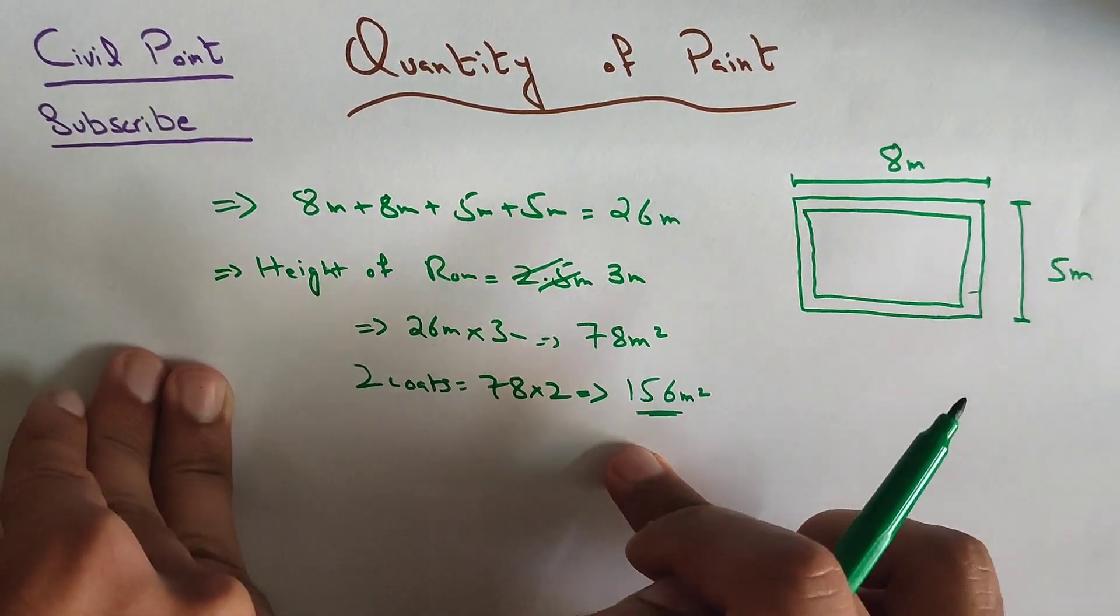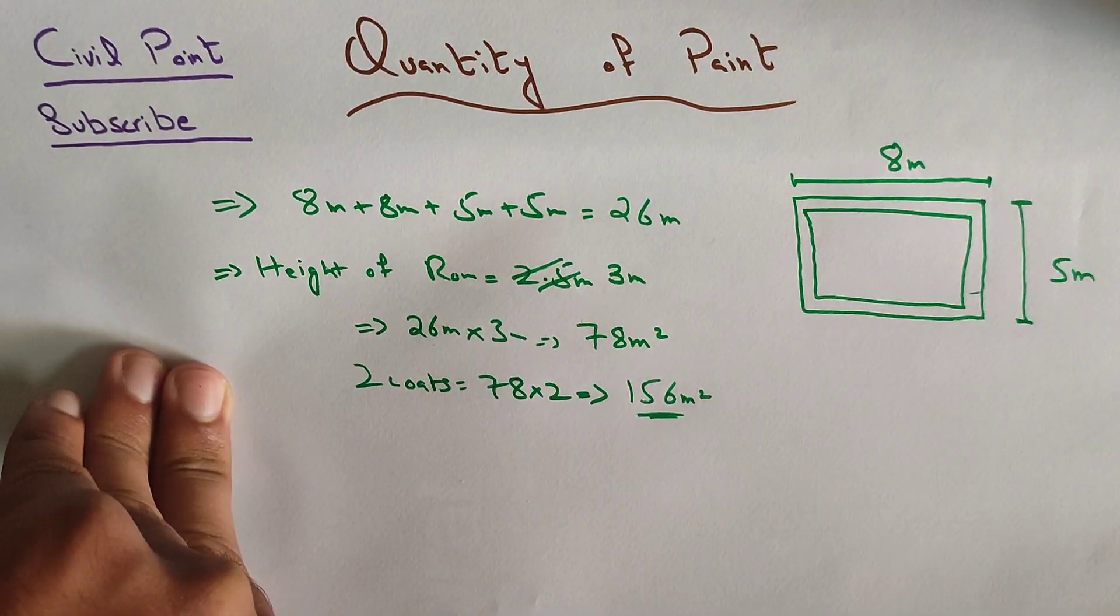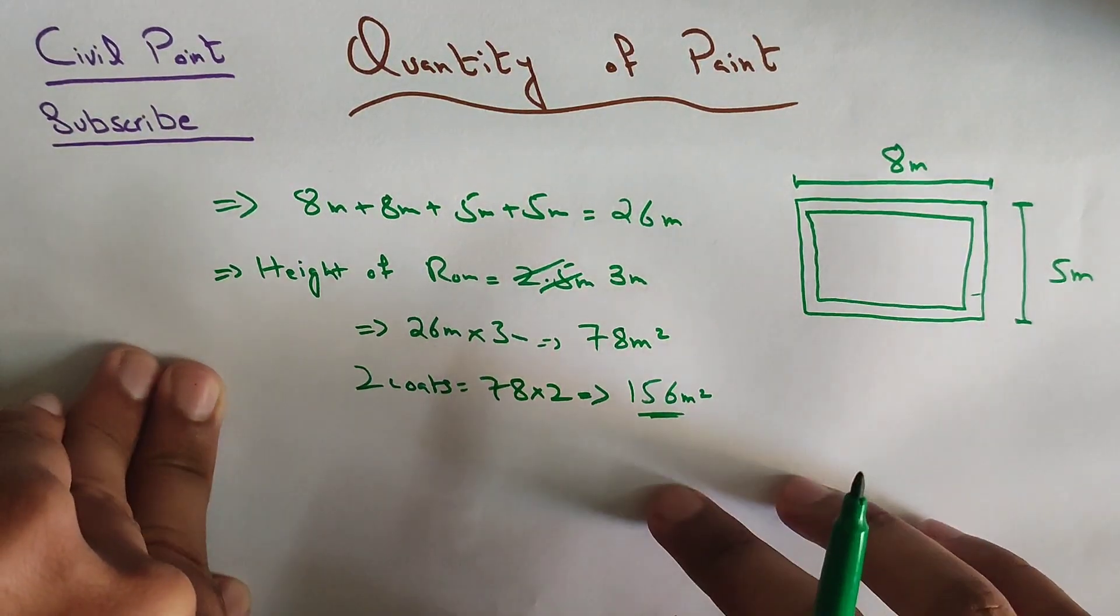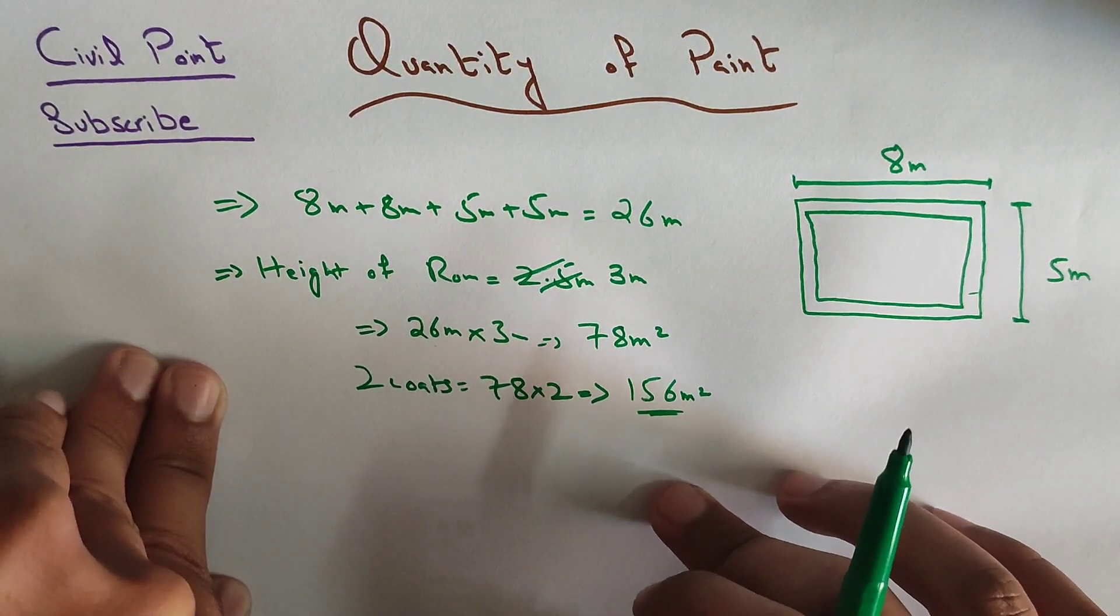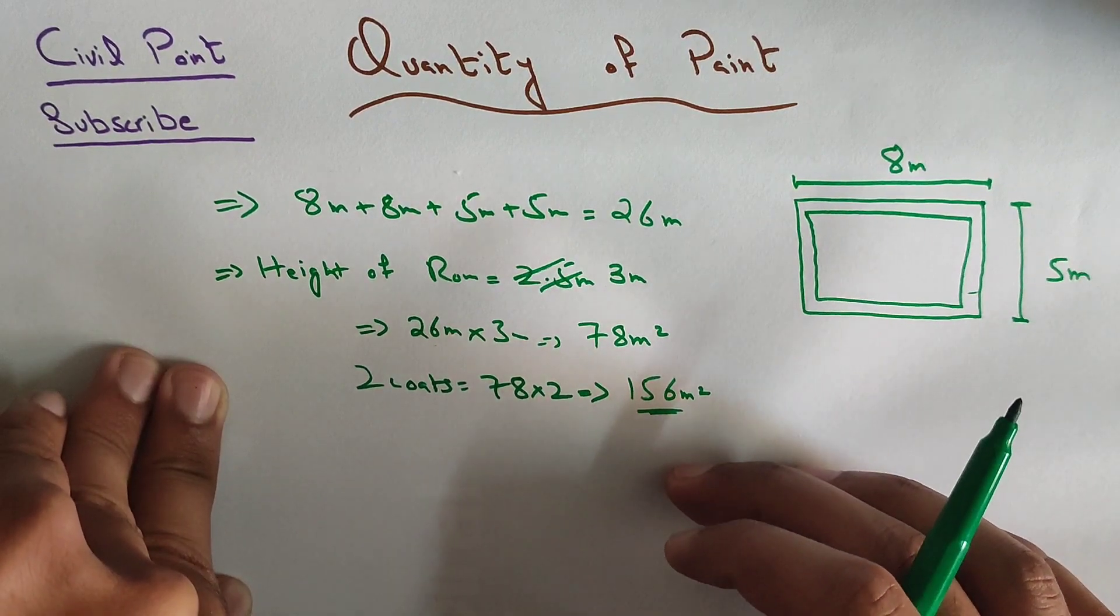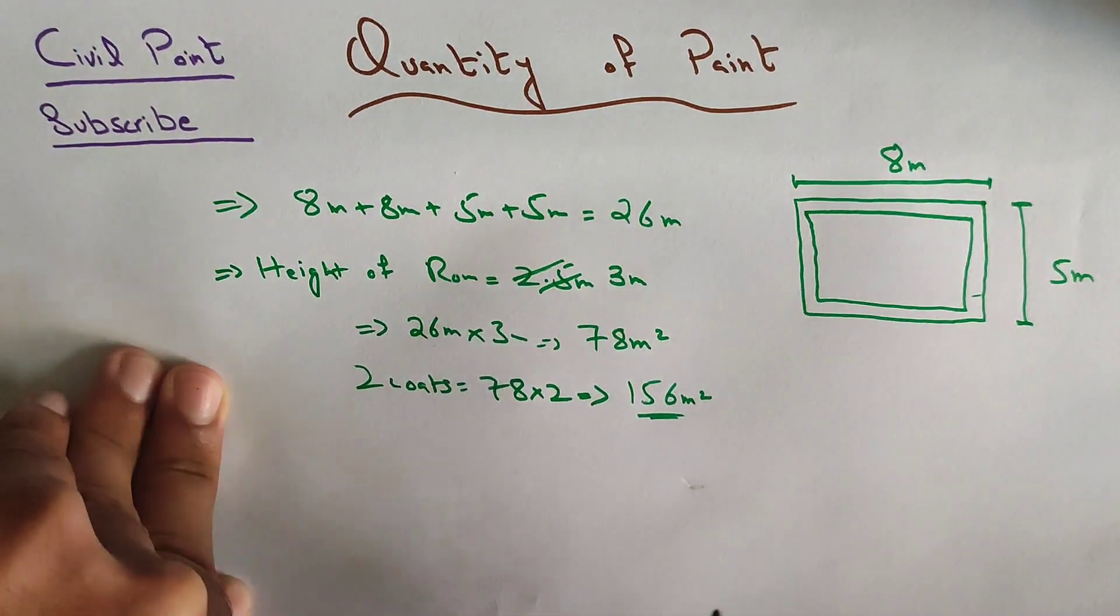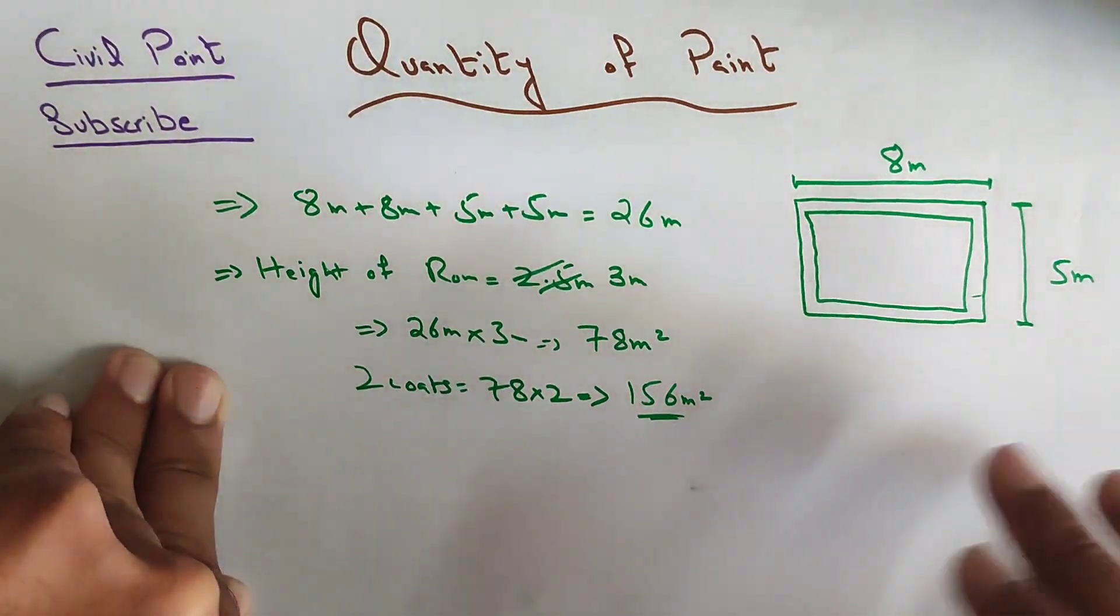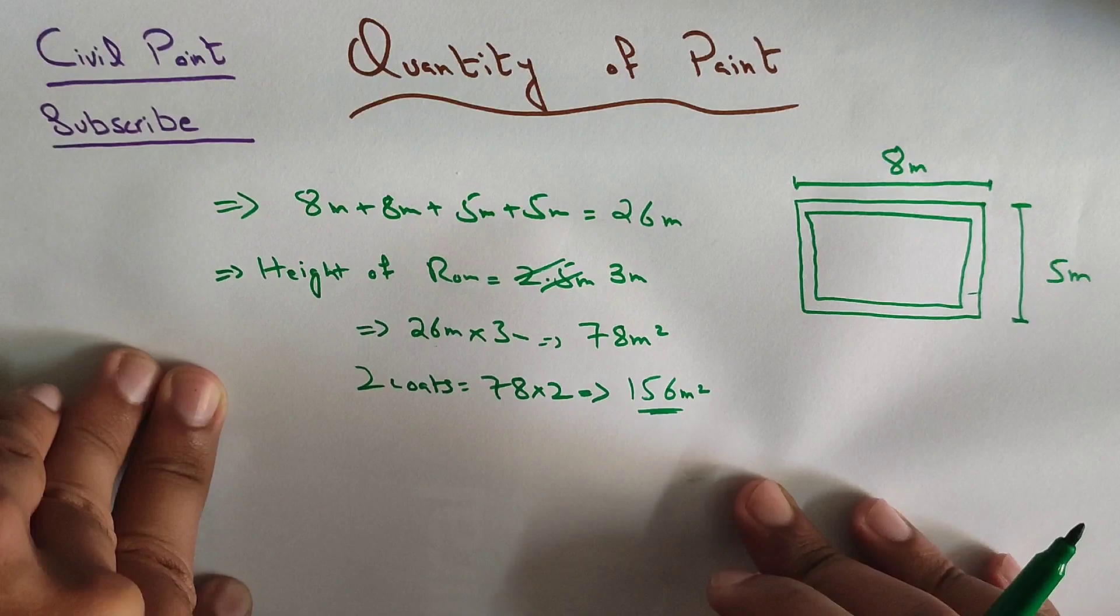So this will be the total final quantity of the paint that will be used for this room. Now the last thing that we have to know is the coverage of the paint that we are going to use. Normally it varies from distributor to distributor, like Berger paint, Dulux paint, or other brands.